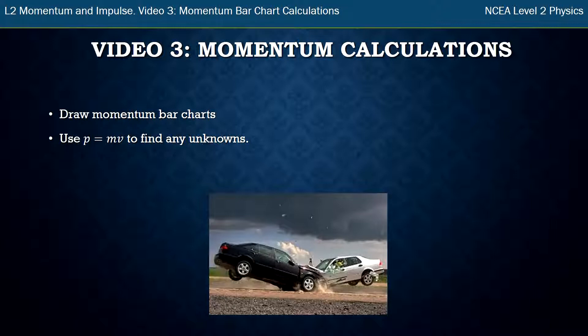Last time in video two we were able to draw our momentum bar charts and from that all we're going to do is add in the equation for momentum, which is P. P is the symbol for momentum, equals mass times velocity to find any unknowns that we need to.